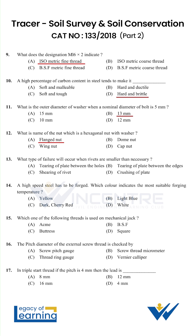What type of failure will occur when rivets are smaller than necessary? Option C: shearing of rivet.